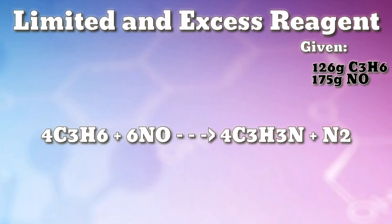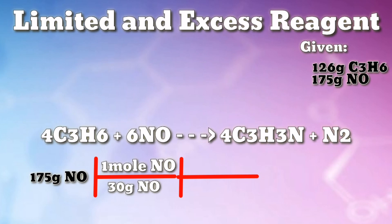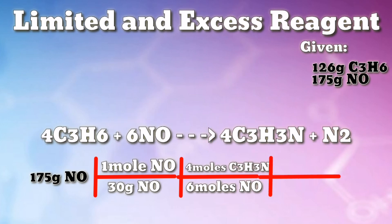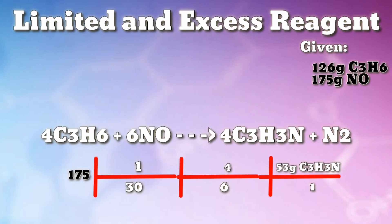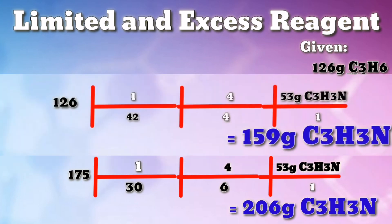Now let's find the mass of acrylonitrile produced from 175 grams of nitrogen monoxide. Starting with 175 grams of nitrogen monoxide, divide by the molar mass of nitrogen monoxide (30 grams), apply the stoichiometric ratio from the balanced equation (4 moles acrylonitrile to 6 moles nitrogen monoxide), and multiply by the molar mass of one mole of acrylonitrile (53 grams). Calculation: 175 ÷ 30 × 4 ÷ 6 × 53 = 206 grams of acrylonitrile. Based on the calculations, the limiting reagent is propylene and the excess is nitrogen monoxide.